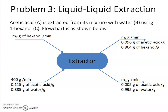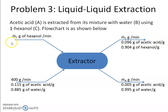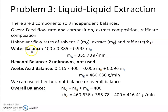The next step is to identify which equation will be easiest to solve first. We look for the component that appears in the fewest flow streams. Water appears in the feed flow and in the raffinate phase only. Hexanol also appears in one inlet and one outlet, but writing that equation gives two unknowns — m-dot-C and m-dot-E — which cannot be solved directly. However, since the feed flow rate is given, writing the water balance lets us quickly find m-dot-R.